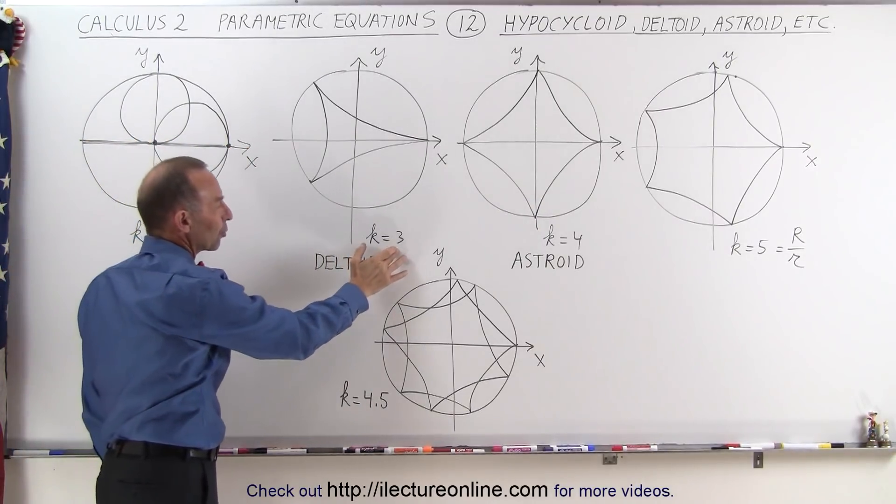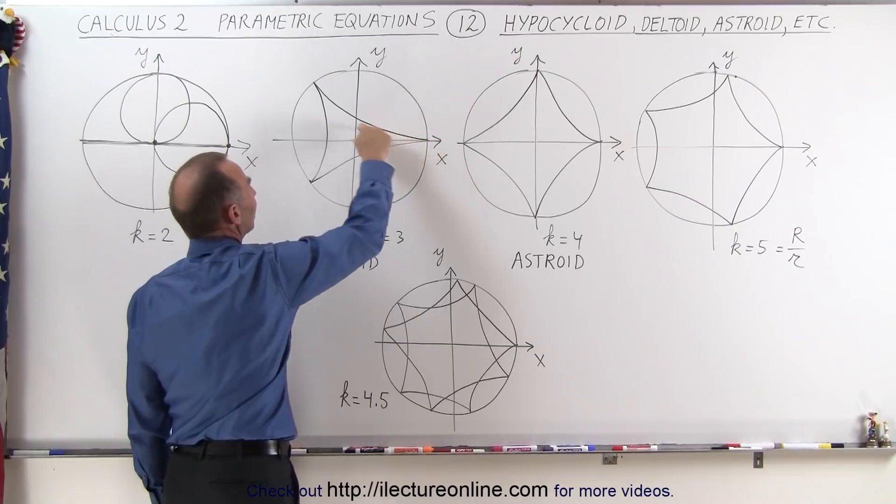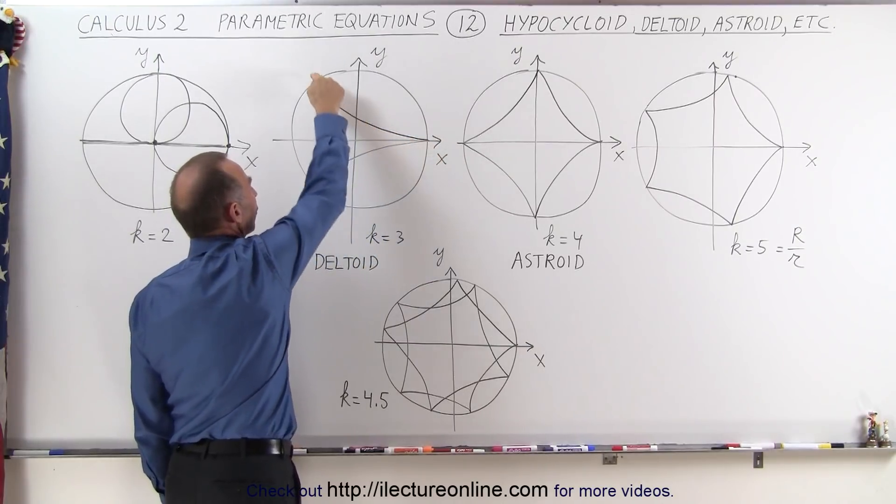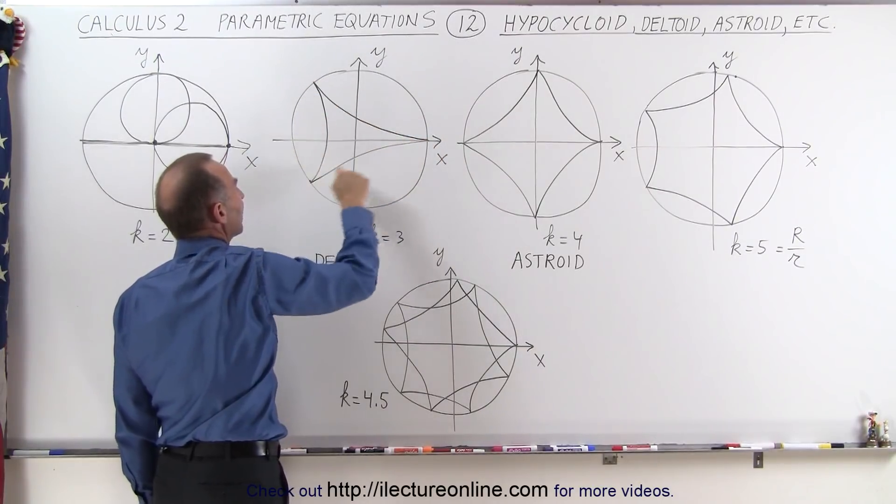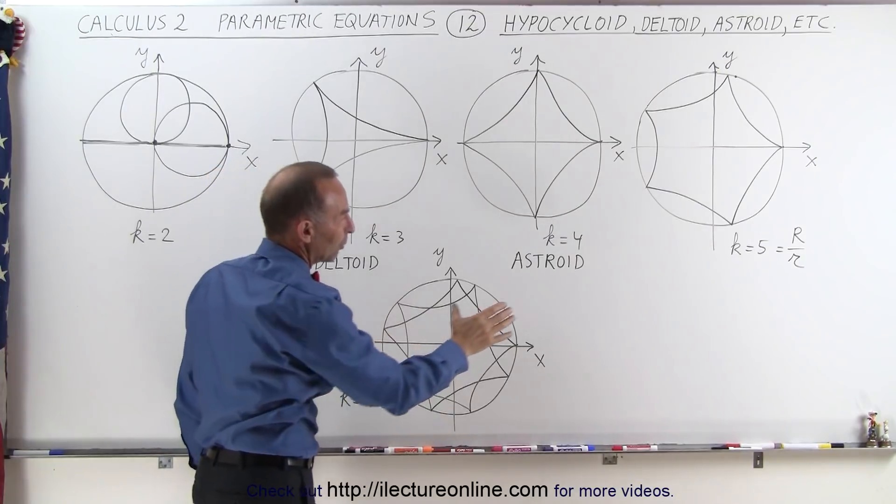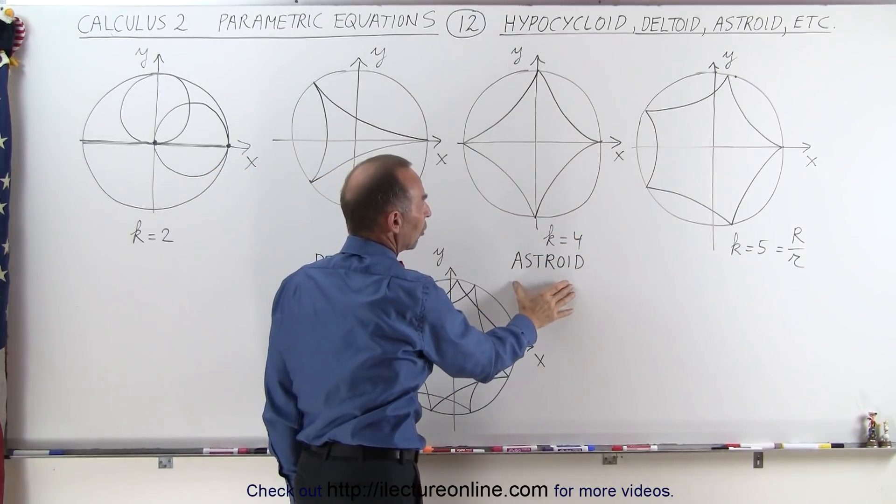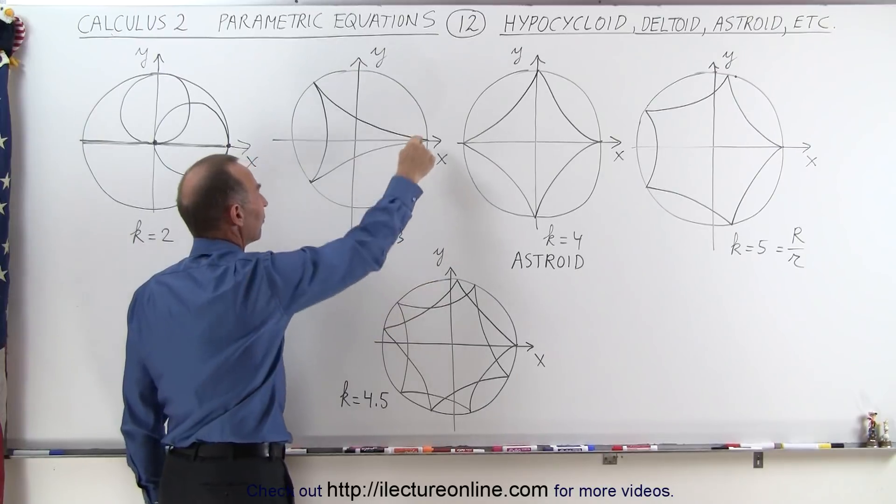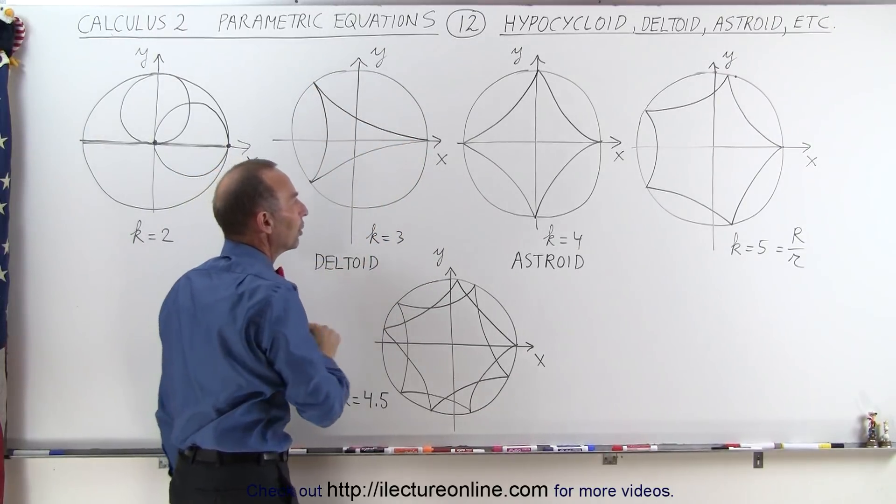But when the ratio is 3, then you have this figure that has these three curves that end up in points at the edge of the big circle. We saw in the previous video when k equals 4, that's called the asteroid. Turns out that when k equals 3, the figure you make here is called the deltoid.